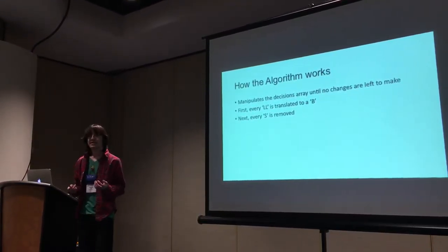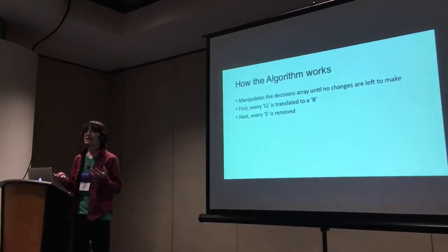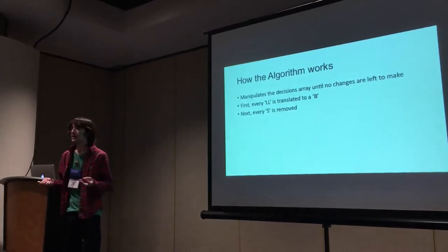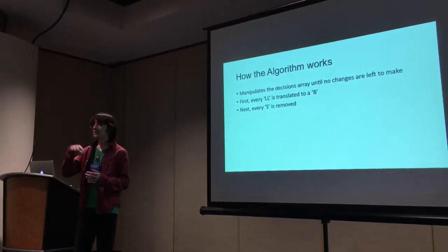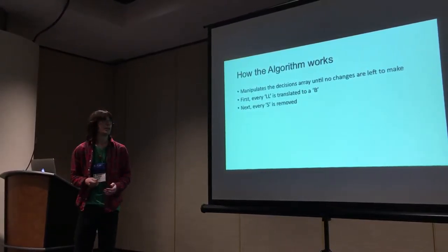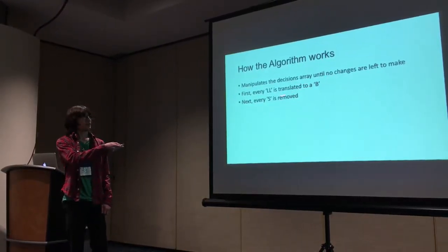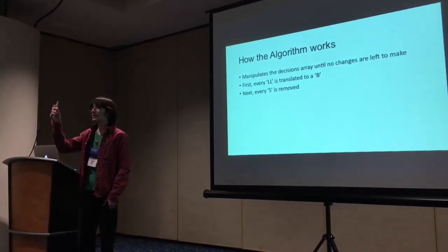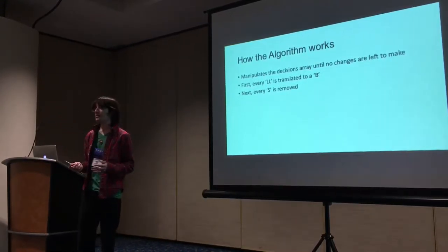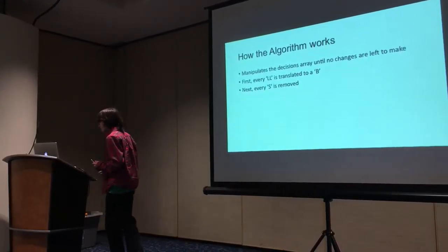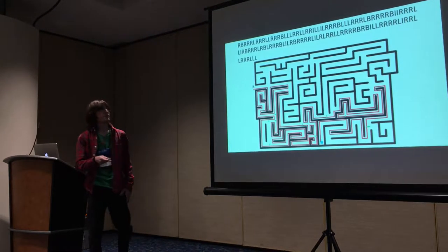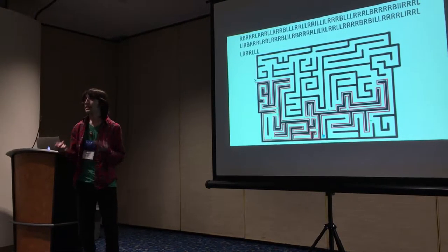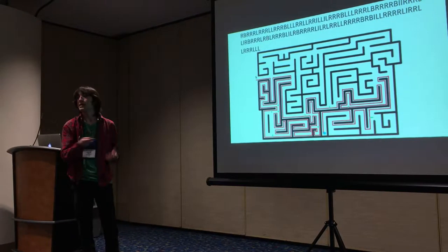The algorithm will manipulate that array until it can no longer make any more changes. First, every double L is translated to a B, which stands for back. As I explained earlier, if we have two L's, we know we've essentially reversed. After that, it removes all the S's because this is all we needed them for—to distinguish whether we're just going up, turning left, going straight, and going up again, or if we're reversing. This is that same maze and what the decisions array looks like after those two steps. You see there's no more S's, and now there's some B's in there.